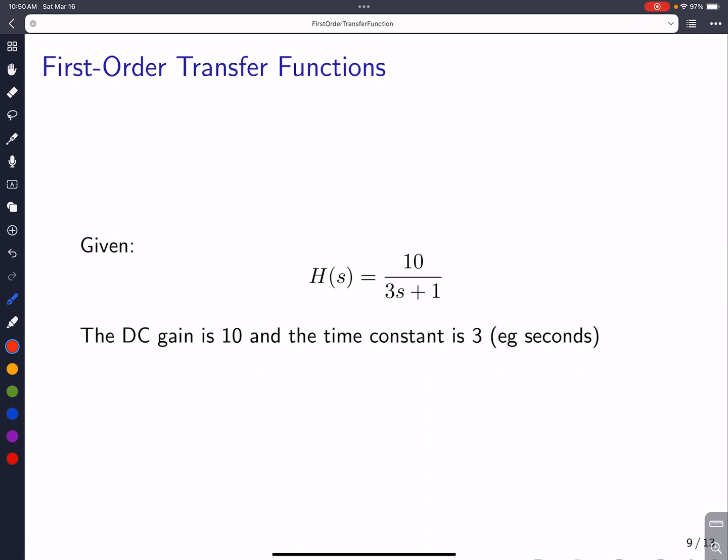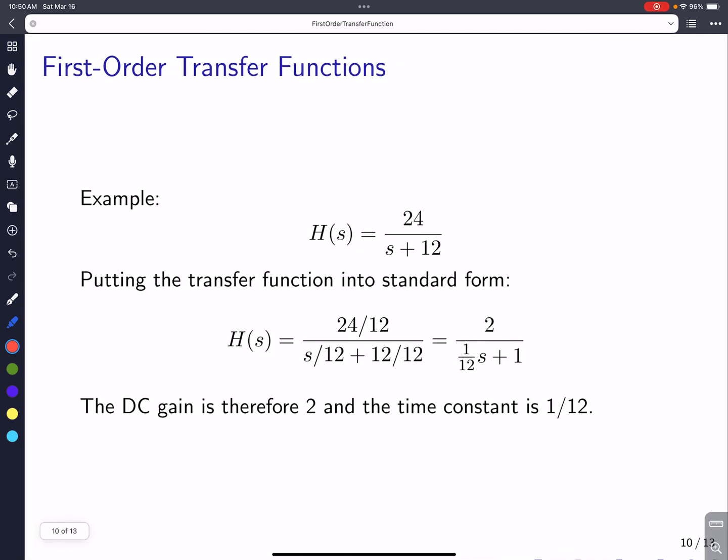So, for example, you may be given an example such as this, a transfer function like this. You'll notice it's in standard form. Remember the standard form was k over some number tau times s plus 1. And we can see that's in standard form. And you immediately know that the DC gain is 10, because that's in the numerator, and the time constant is 3. Now the time constant has units of time, so maybe seconds.